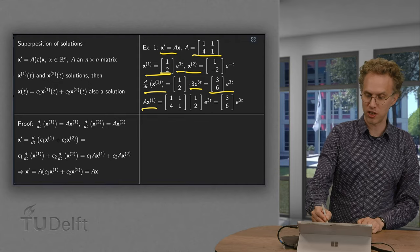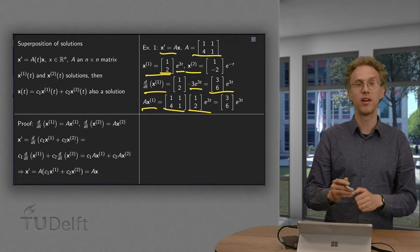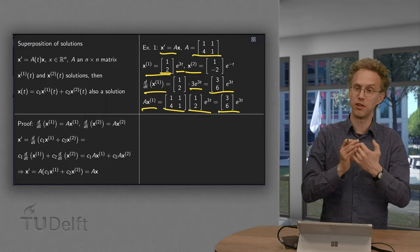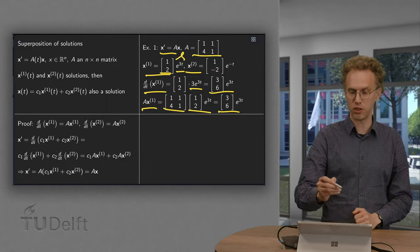A times x1 equals A times, here we have x1. Compute matrix times vector. You also get 3, 6 times e to the power 3t. So x1 is indeed a solution.